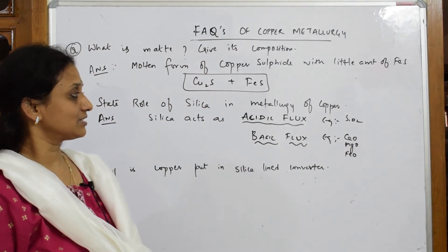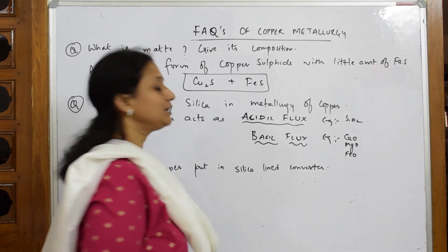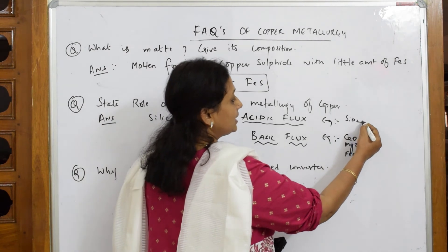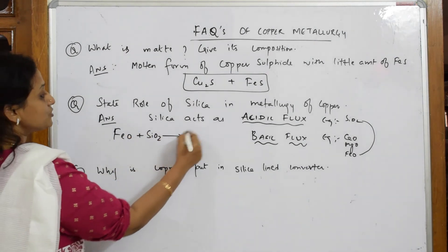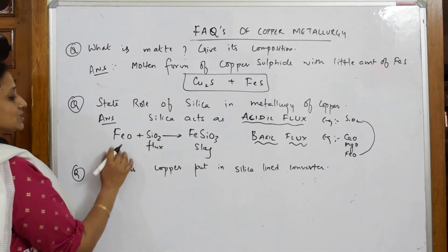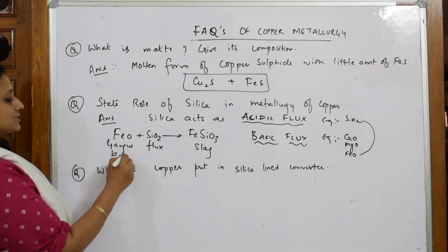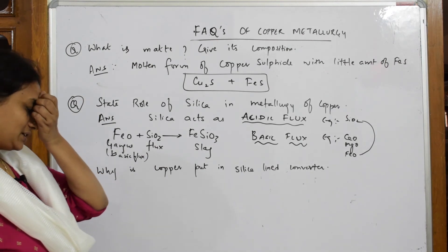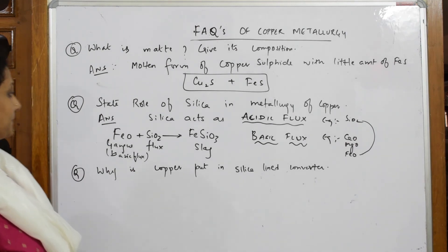If I take acidic flux and basic flux and add both, I get a slag. In metallurgy of copper, silica is added to FeO: FeO + SiO₂ combines to form slag FeSiO₃. Here, FeO is the gangue and SiO₂ is the flux — gangue plus flux gives us slag. FeO is also a basic flux.